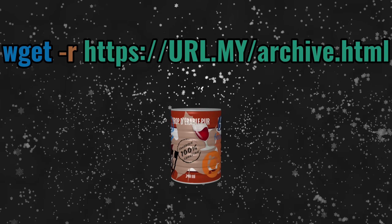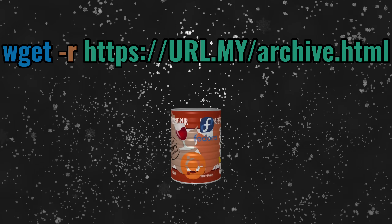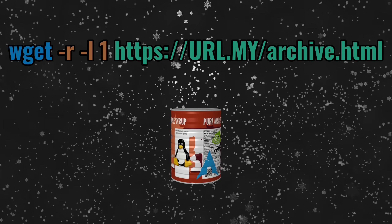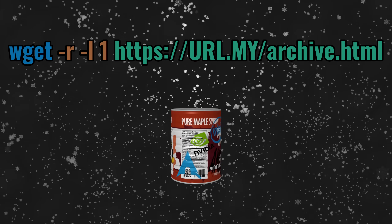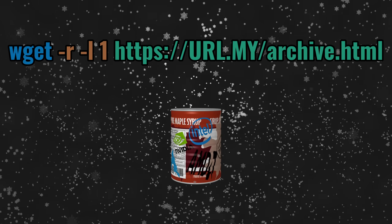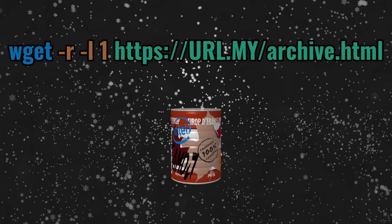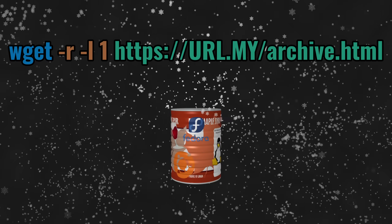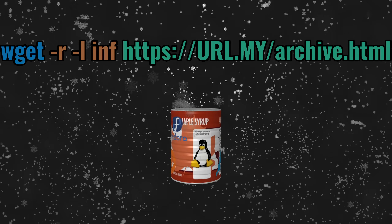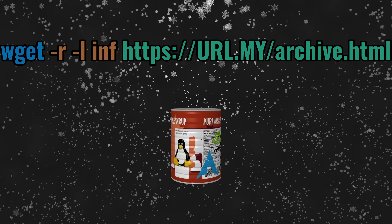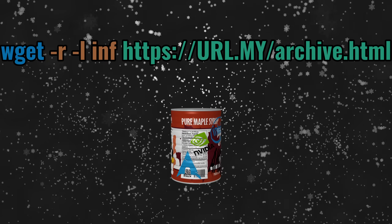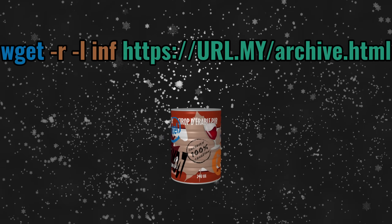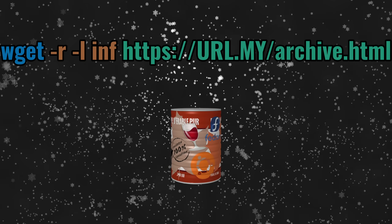To lower the recursion depth, use the -l option to reduce it. For example, -l 1 tells Wget to download all pages linked from the target page, but no further — that's the safest option. You can also set infinite recursion using -l 0 or -l inf, but please never do that. You're just wasting bandwidth, and bandwidth costs money.